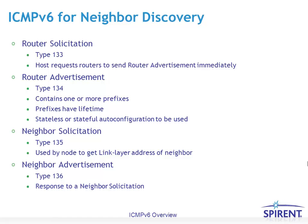ICMPv6 provides a control plane framework for neighbor discovery, including router solicitation, router advertisement, neighbor solicitation, and neighbor advertisement messages — you can see the various type values on this slide. A router solicitation gives a host the capability to request routers to send router advertisements immediately; otherwise, router advertisements are sent unsolicited by routers periodically. More detail on neighbor discovery will be covered in a separate topic of this Demystifying IPv6 course.